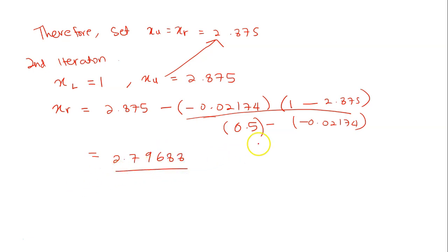And now you can calculate your ea because you are asked to calculate your ea. ea is 2.79688 minus the previous x_r which is 2.875 divided by 2.79688. This is 100%. And absolute value. So you get 2.793%.